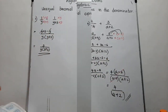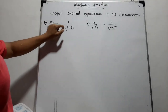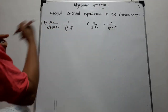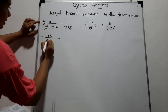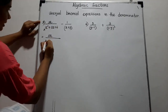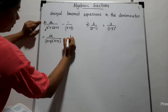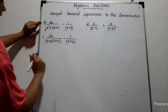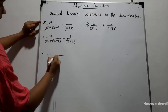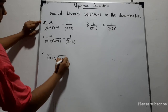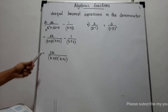Let's see another example: 3X over (X squared plus 5X plus 6), subtract 1 over (X plus 3). First, we have to factorize the denominator. X squared plus 5X plus 6 factors as (X plus 3)(X plus 2). So we have 3X over (X plus 3)(X plus 2), subtract 1 over (X plus 3). Then we obtain the LCM, which is (X plus 3)(X plus 2). For the first fraction, all terms are there, so we write 3X as is — we do not multiply by any term.